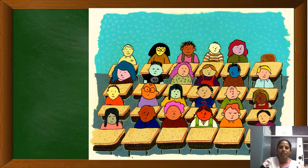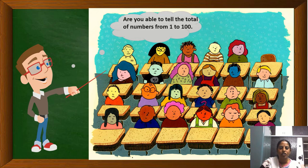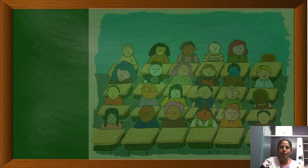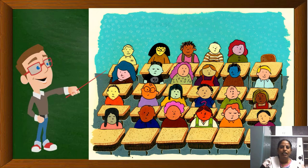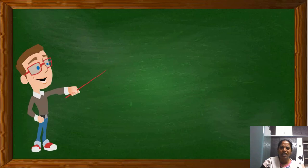The teacher thought this task could engage Gauss for half an hour or more. So he gave the question: Gauss, are you able to tell the total of numbers from 1 to 100? The teacher thought Gauss would take more time to give the number. But within a few seconds, Gauss answered: Sir, it is 5050. The teacher was surprised and thought Gauss was guessing a number, so he answered so quickly.